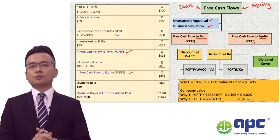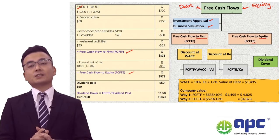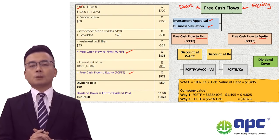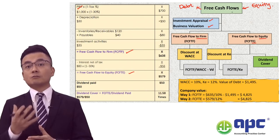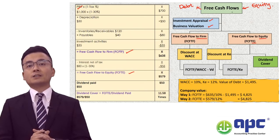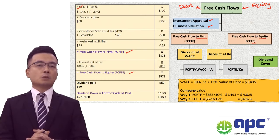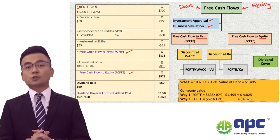To calculate the free cash flows to firm, you take the profit before interest and tax — sometimes known as operating profit or EBIT. This can be estimated by projecting future revenues and costs for a project, or taken from a company's published financial statements, where it is usually disclosed directly by the entity.